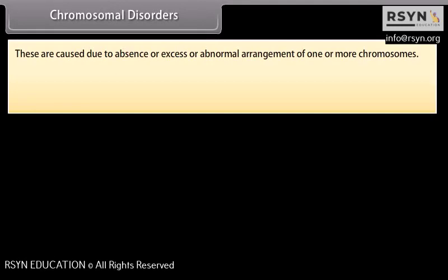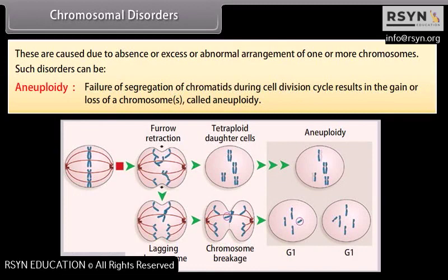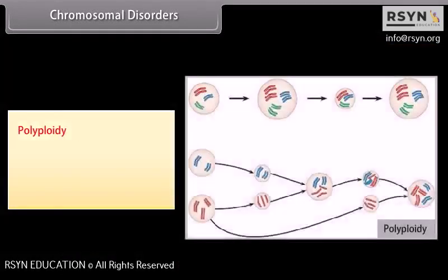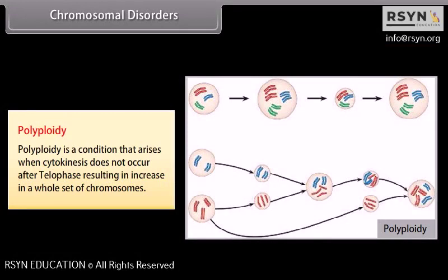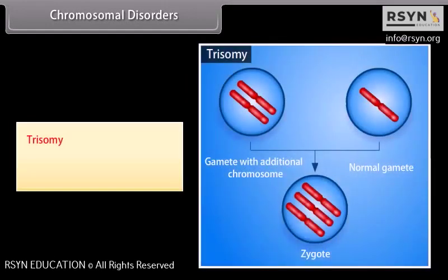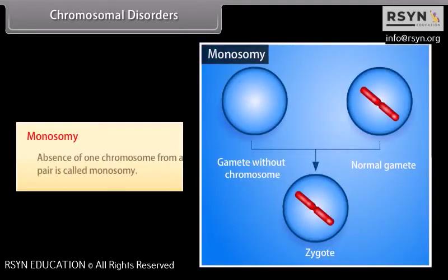Chromosomal Disorders are caused due to the absence, excess, or abnormal arrangement of one or more chromosomes. Aneuploidy refers to failure of segregation of chromatids during cell division, resulting in gain or loss of chromosomes. Polyploidy arises when cytokinesis does not occur after telophase, resulting in an increase in a whole set of chromosomes. Trisomy refers to an extra copy of a chromosome, while monosomy refers to the absence of one chromosome from a pair.